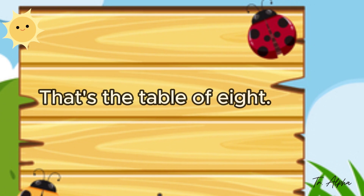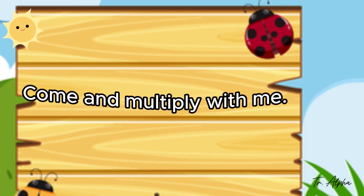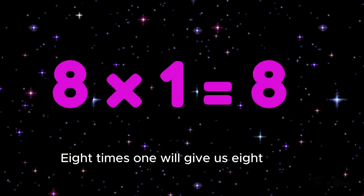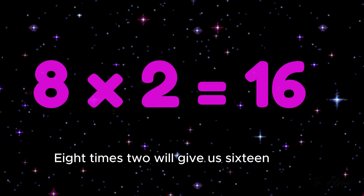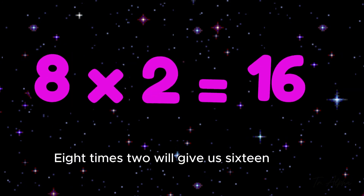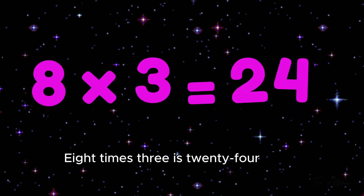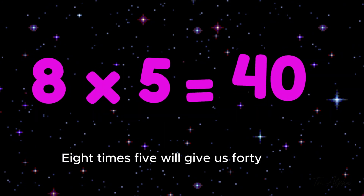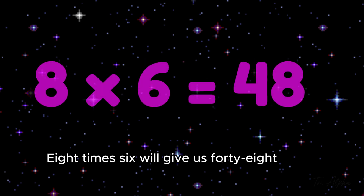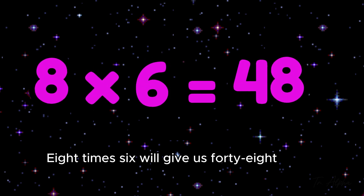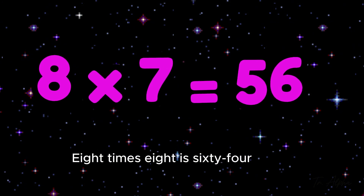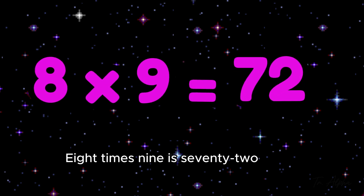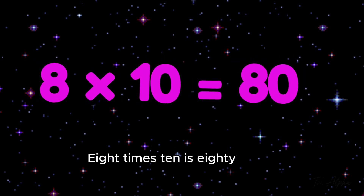That's the table of 8, come and multiply with me! 8 x 1 will give us 8. 8 x 2 will give us 16. 8 x 3 is 24. 8 x 4 is 32. 8 x 5 will give us 40. 8 x 6 will give us 48. 8 x 7 is 56. 8 x 8 is 64. 8 x 9 is 72. 8 x 10 is 80.